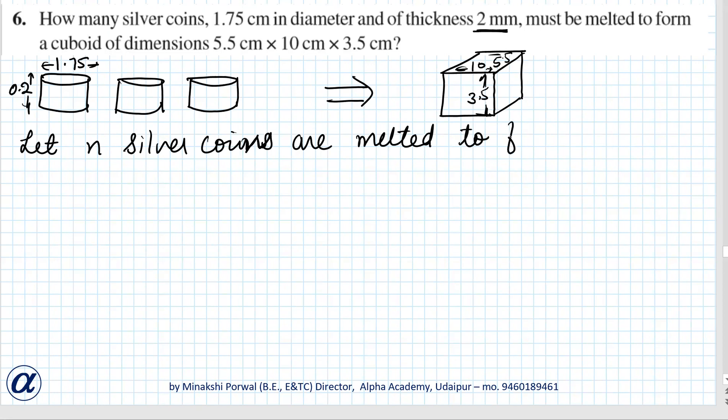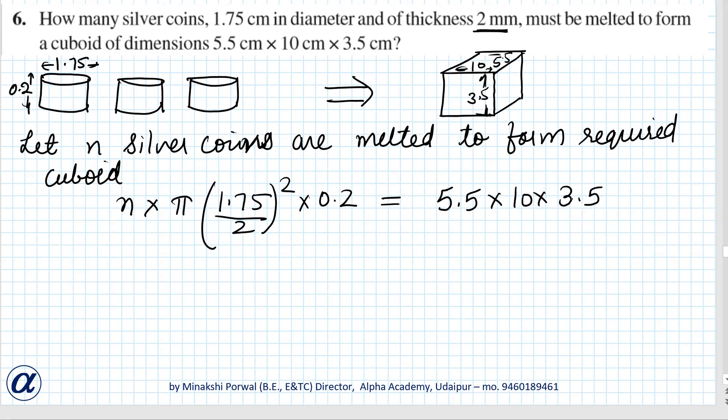to form the required cuboid. Okay so n into pi r square h, radius is 1.75 by 2 whole square into h is 0.2, equals to 5.5 into 10 into 3.5. Okay so we'll solve this. We have to find the value of n, so we'll keep n only on this side, rest everything will move on other side.